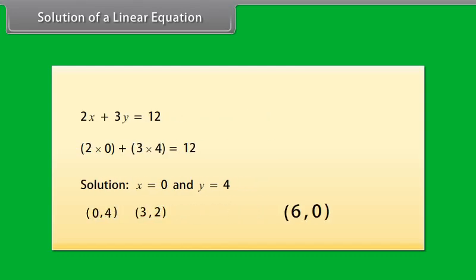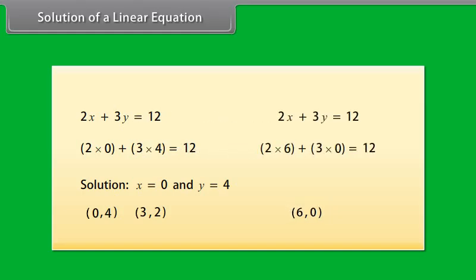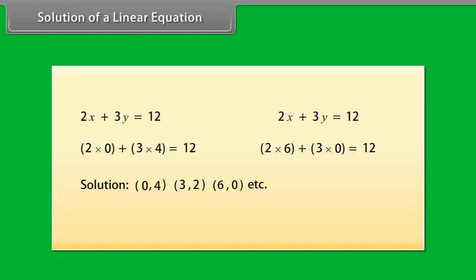Is (6, 0) also a solution of this equation? Yes, (6, 0) is also a solution, because when you substitute X as 6 and Y as 0, you get 12. Similarly, many other solutions can be found from this single equation, and there is no end to the different solutions of a linear equation in two variables. Therefore, we can say that a linear equation in two variables has infinitely many solutions.